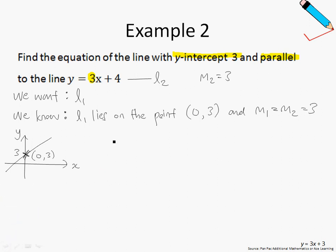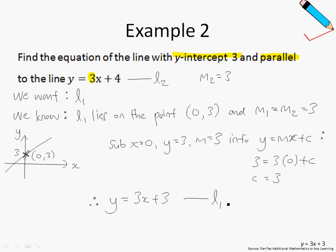Moving on, we will substitute x equals 0, y equals 3, and M equals 3 into our favorite equation, which is the general equation of any straight line, y equals Mx plus C. So 3 equals 3 times 0 plus C, and C is just 3. And therefore, our line L1 is just y equals 3x plus 3. This is the line that we want, L1.